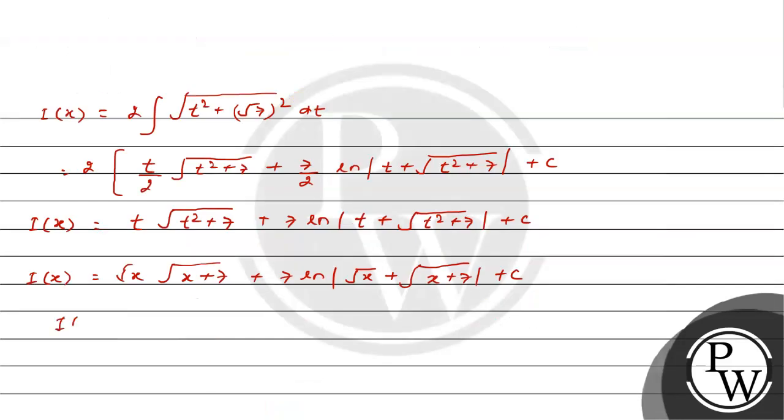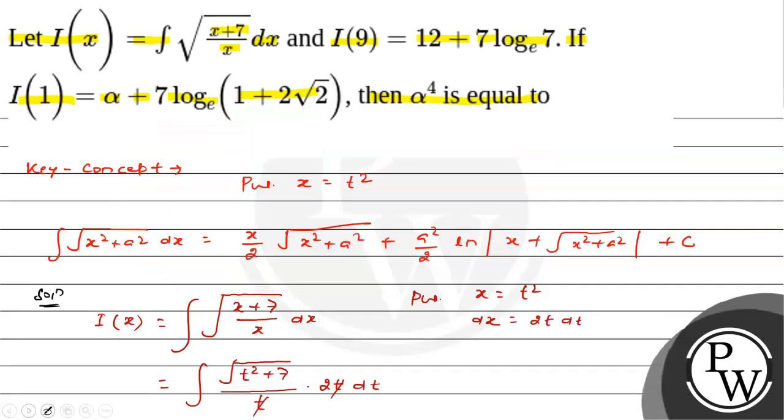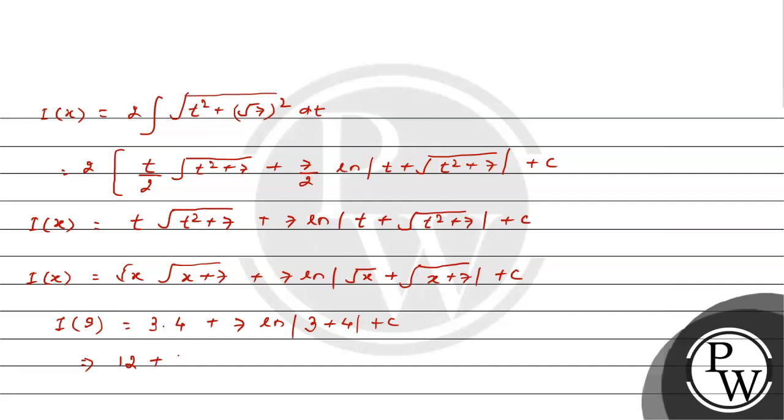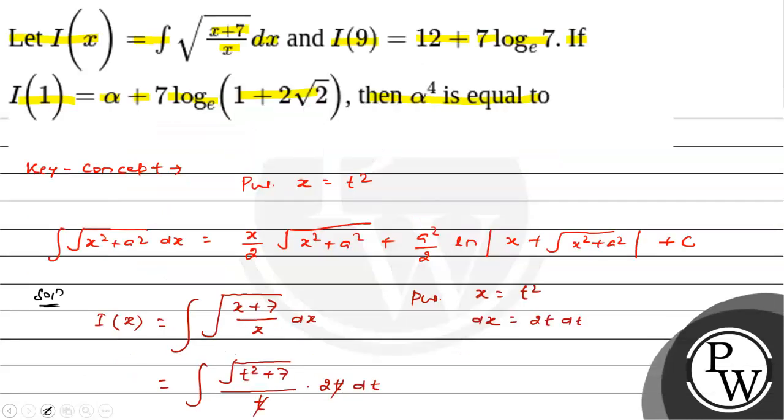Put the value of x equal 9: we get 3√16 plus 7 ln|3 + 4| plus C. I(9) is given as 12 plus 7 ln 7. This equals 12 plus 7 ln 7, so the 12's cancel, ln 7's cancel, therefore the value of C is 0.